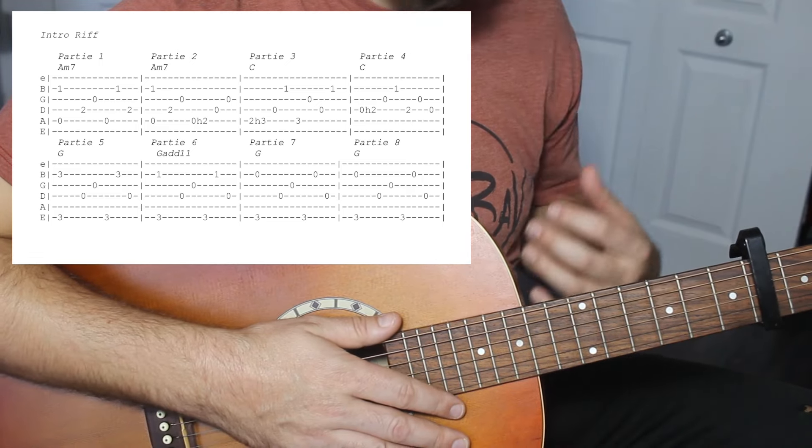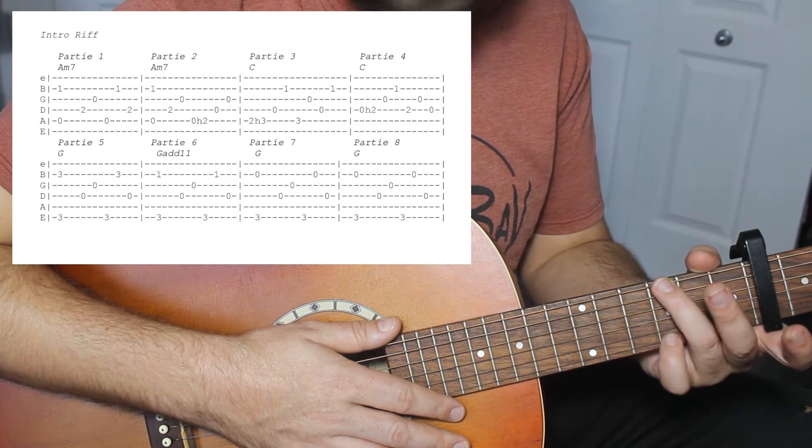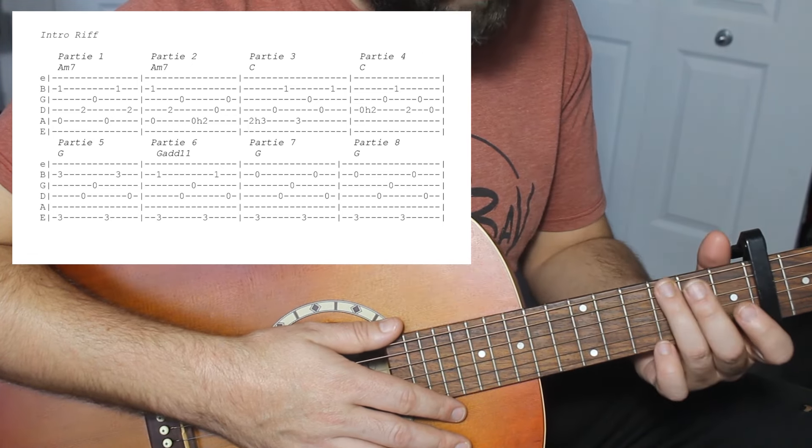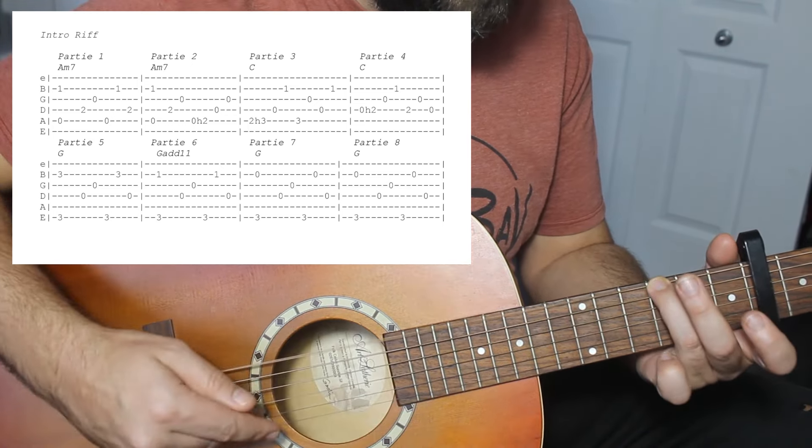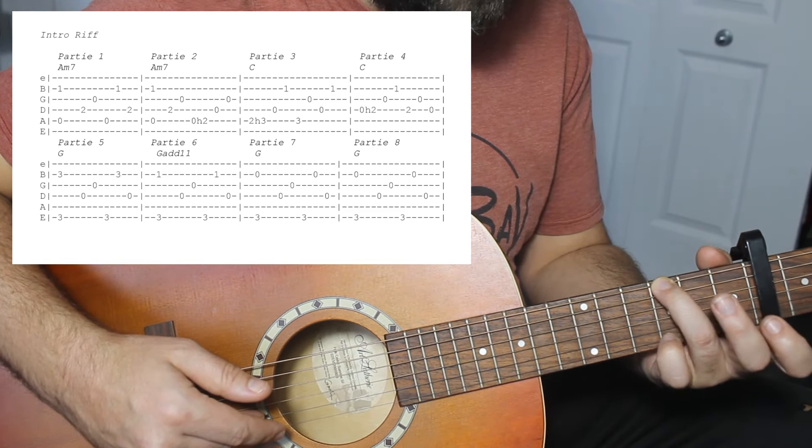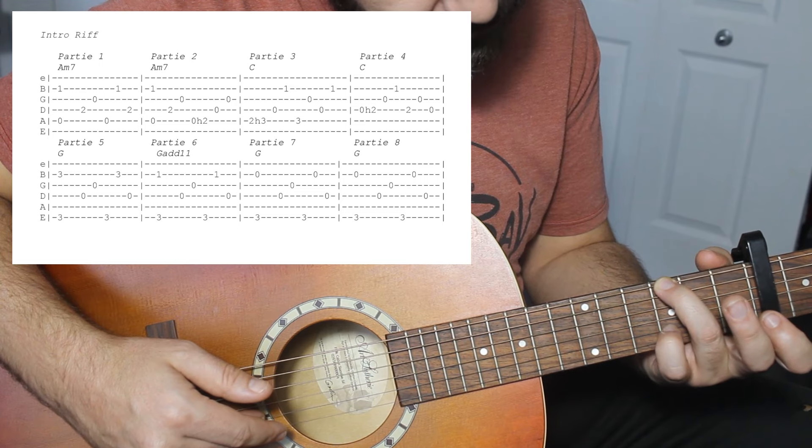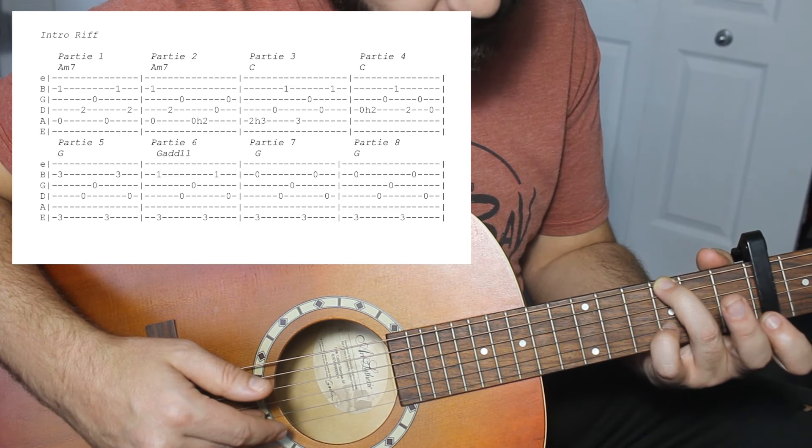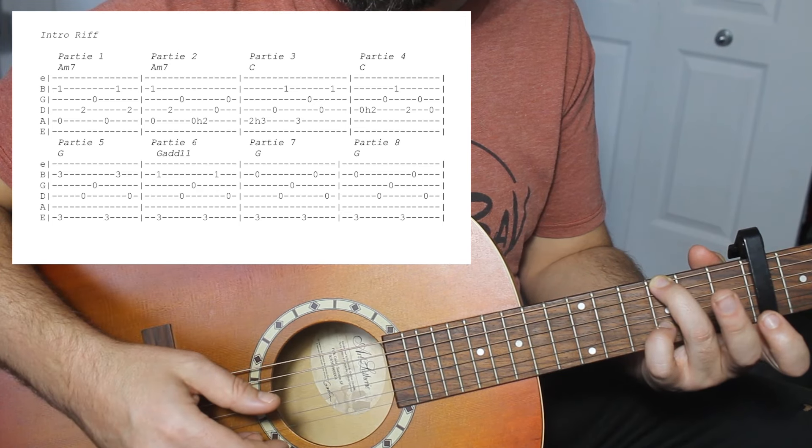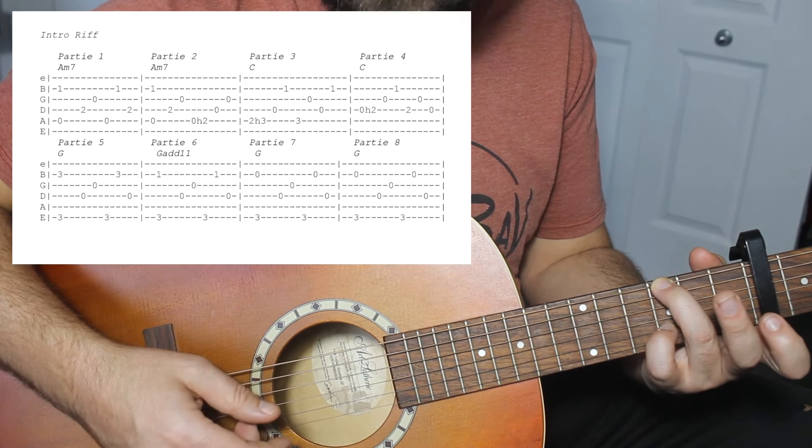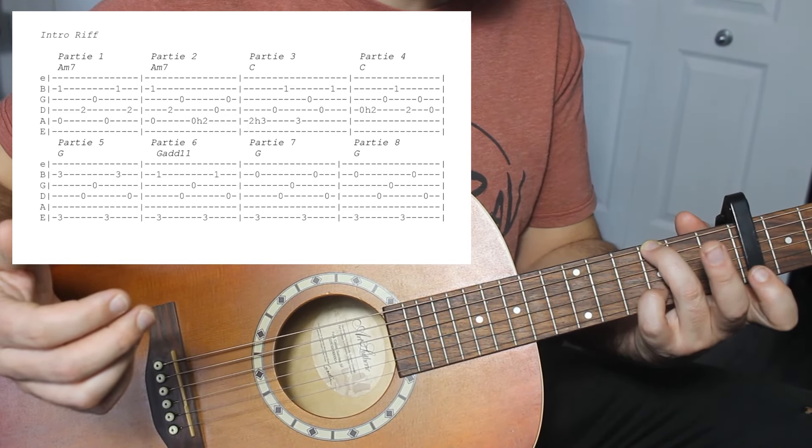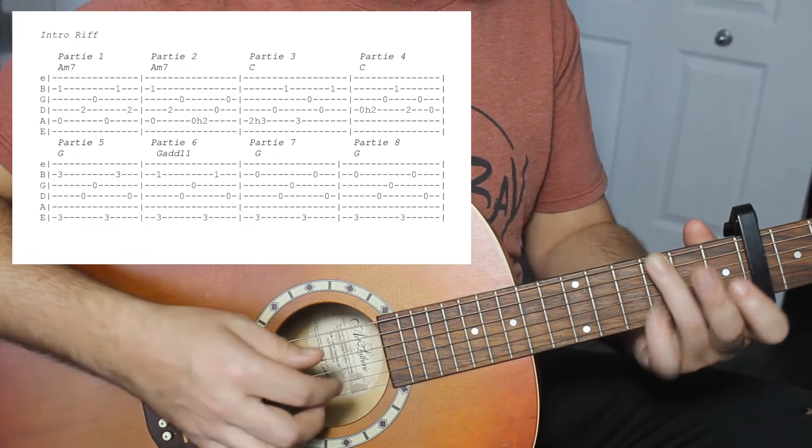Je vais vous montrer que le G, on va le faire d'une façon assez spéciale, parce qu'on a besoin de notre premier doigt pour aller chercher des notes plus tard. Vous allez mettre votre troisième doigt sur la troisième case, la sixième corde. Et votre petit doigt sur la deuxième corde, la troisième case. Oubliez la première corde. La première corde, on l'oublie carrément.